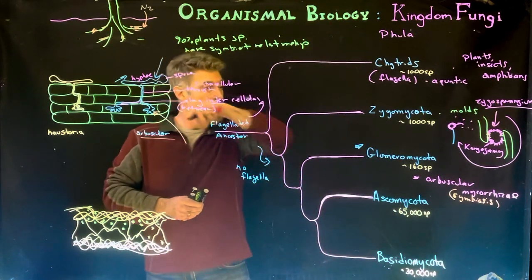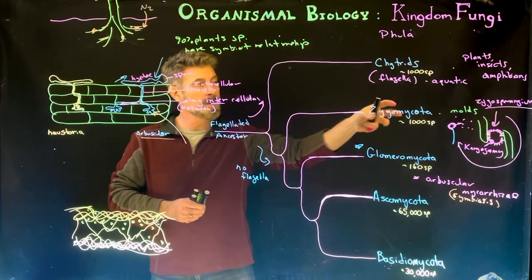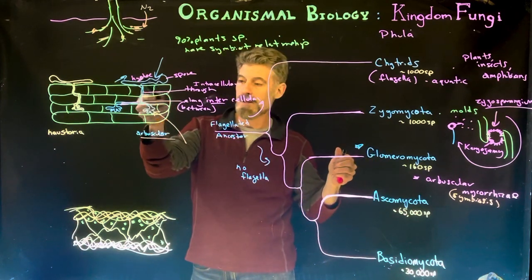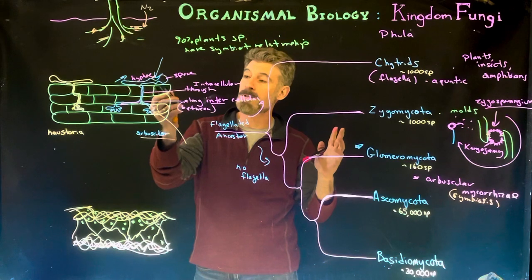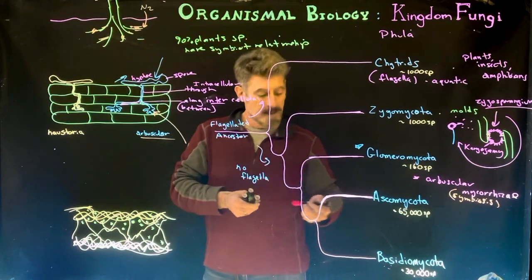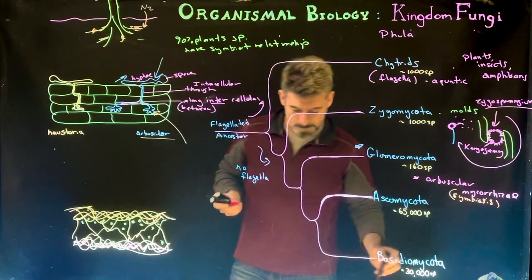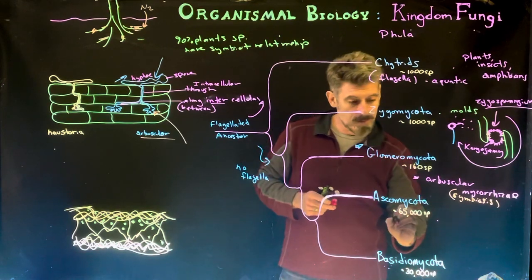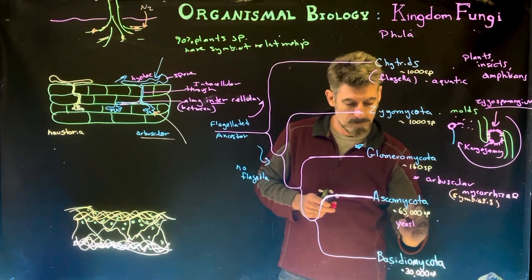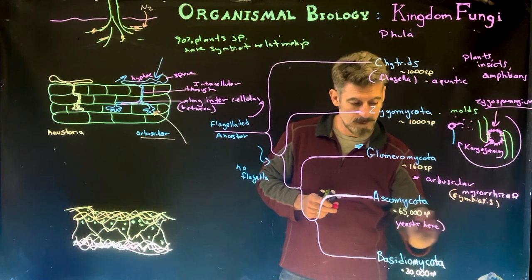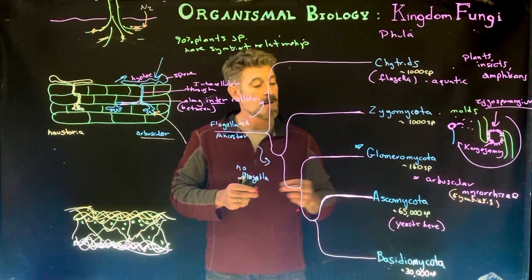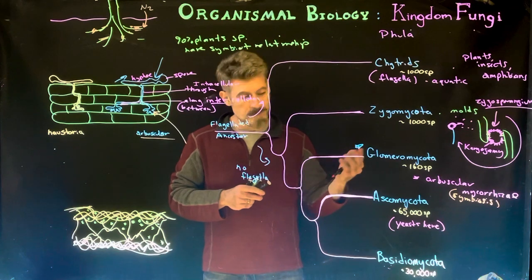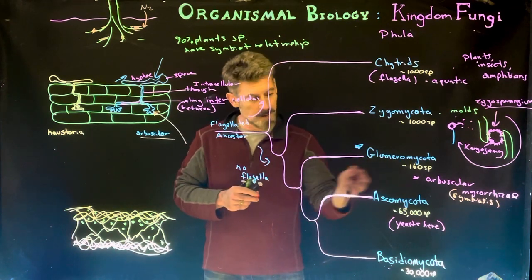We have the zygomycota forming this unique structure called zygosporangium. The glomeromycota having the branching hyphae that are almost all in complete association with plant roots. Then we have the ascomycota. Ascomycota, sometimes referred to as the sac fungi. Yeasts belong to this group. And the yeasts are single-celled fungi that are kind of unique among them, but they are also part of this ascomycota.